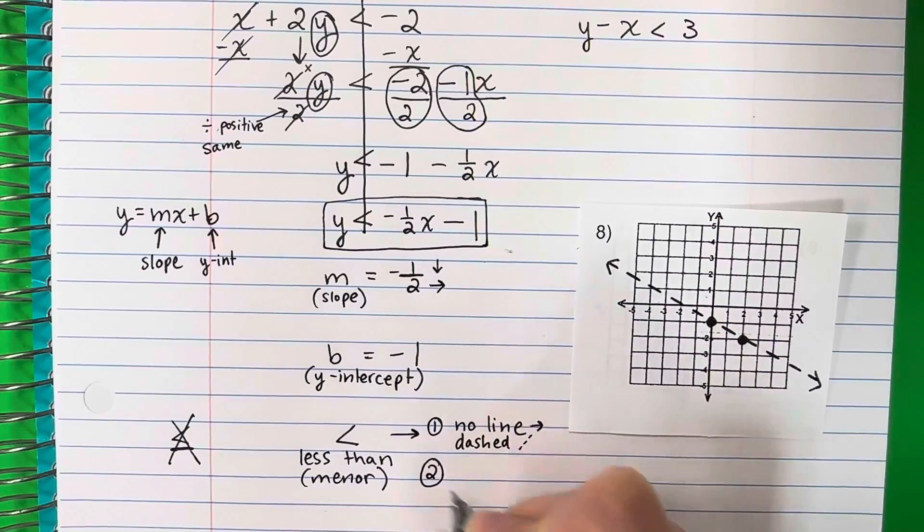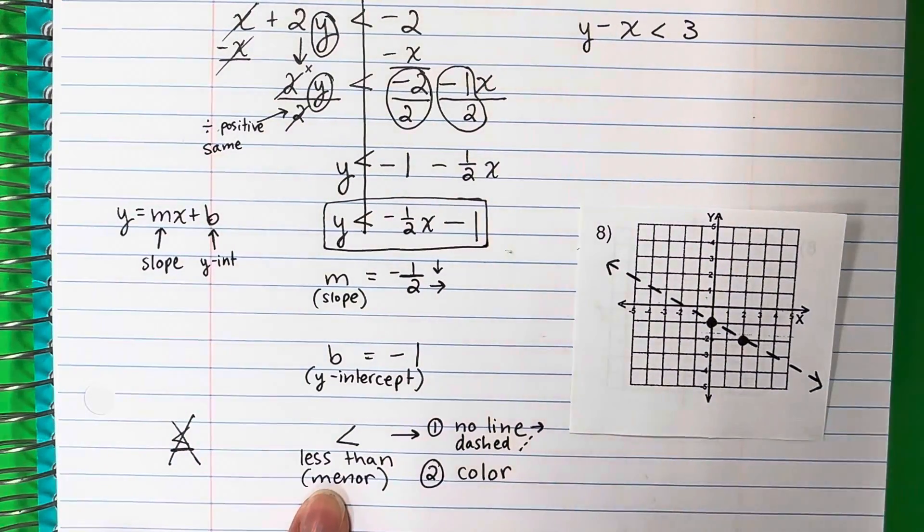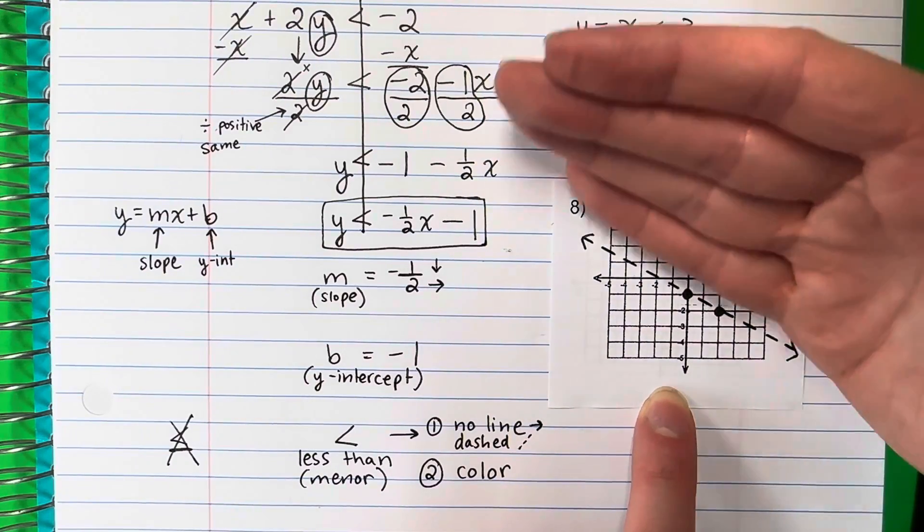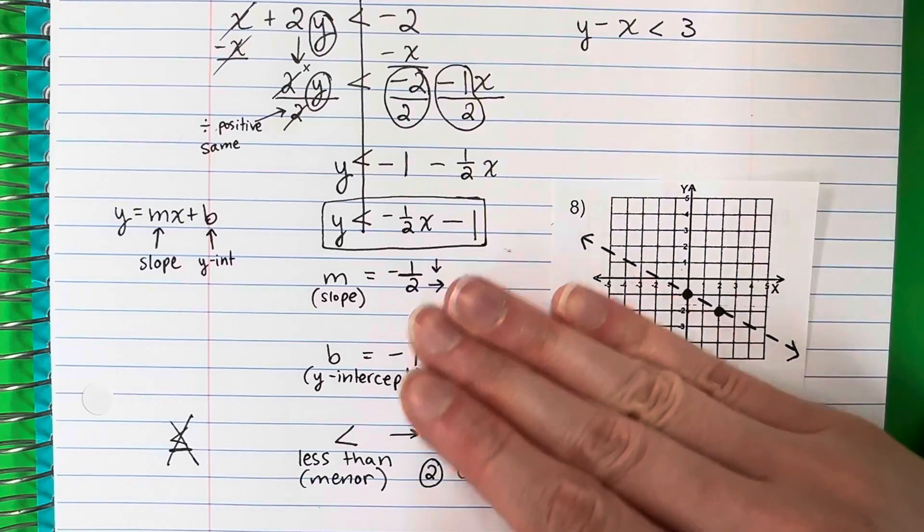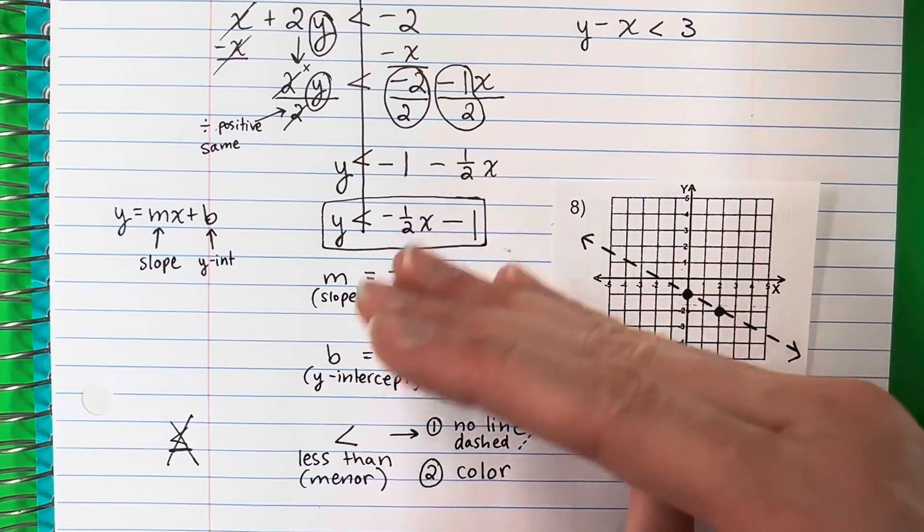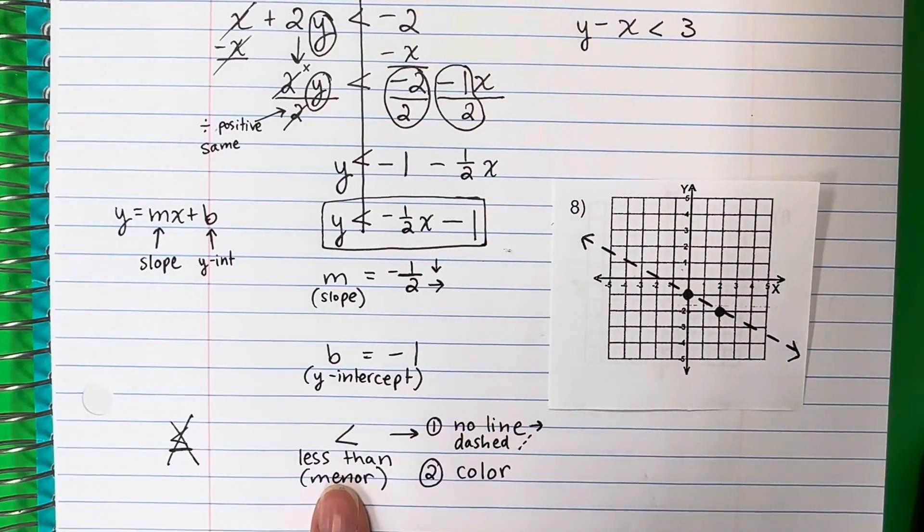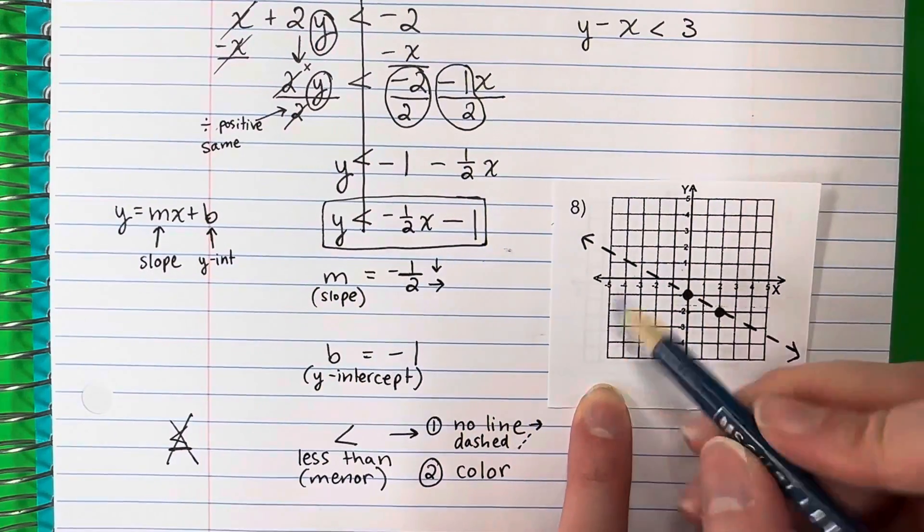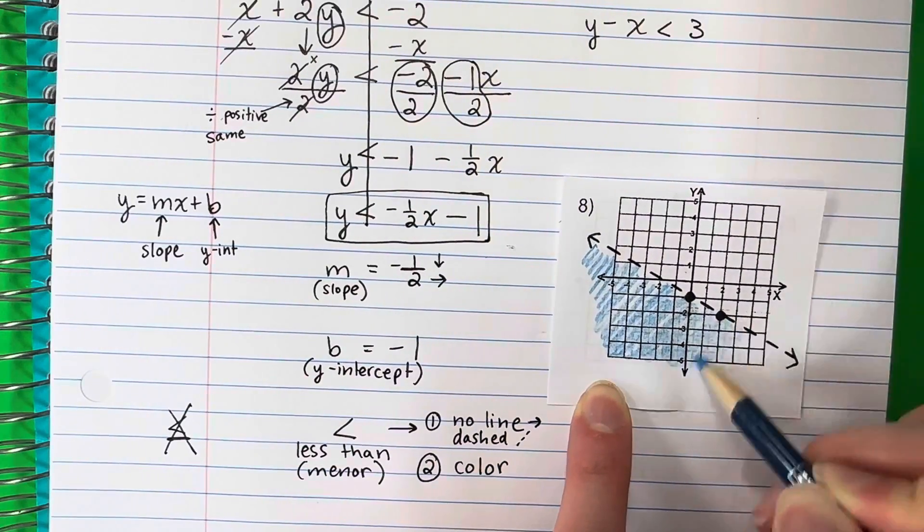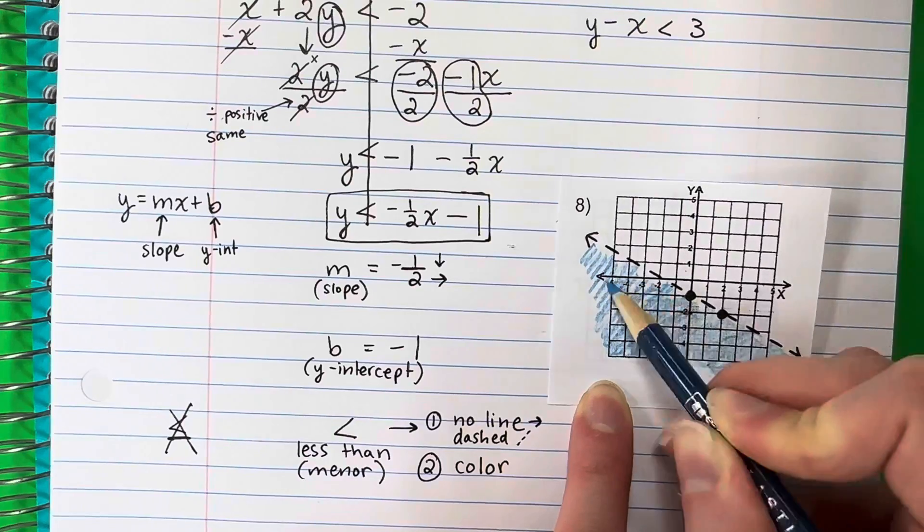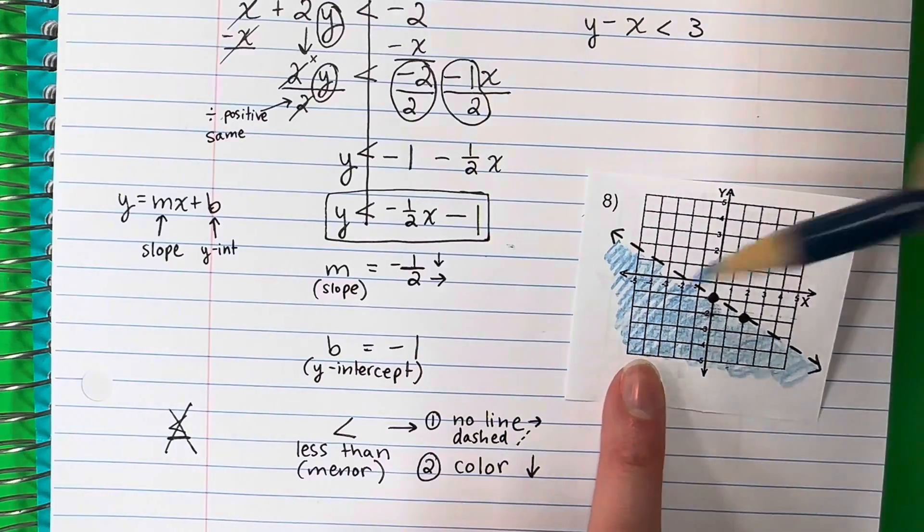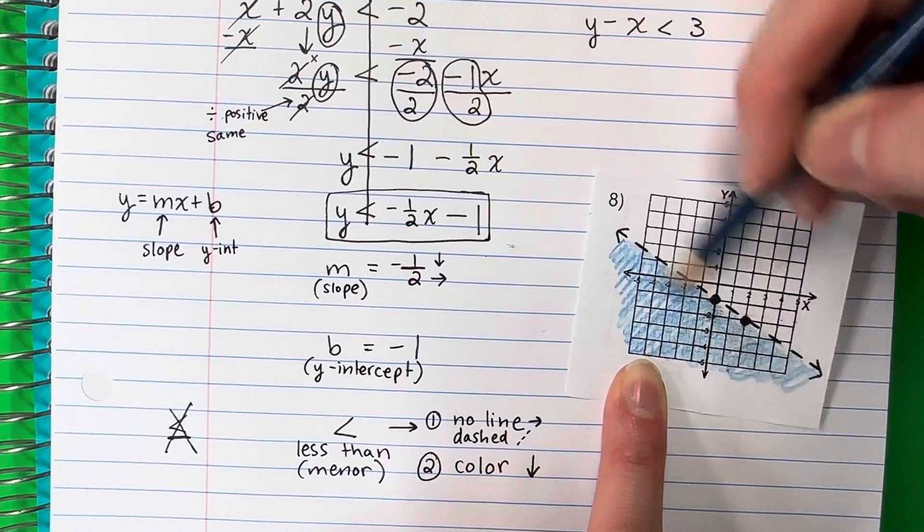My second thing is the color. This is less. Where are the small numbers? Are they up where the positives are, or are they down where the negatives are? So less, smaller numbers, are down. Because that's where the negatives are, that's where the small numbers are. So you're going to go ahead and color down from the line. You're going to color down because it's small. So color all the way, all of that line down.